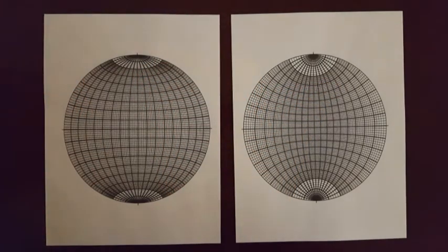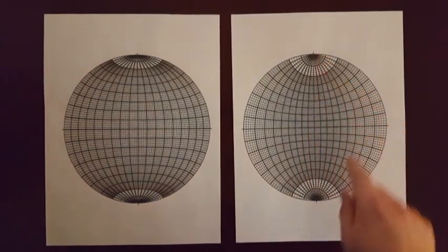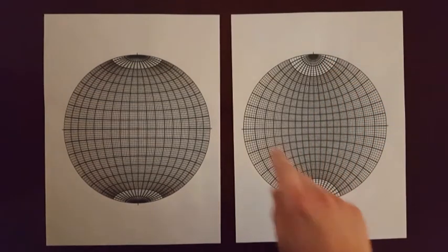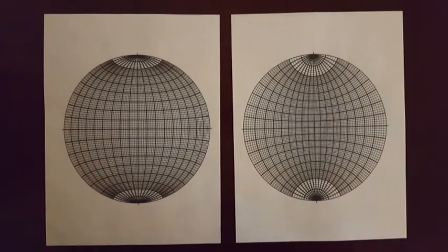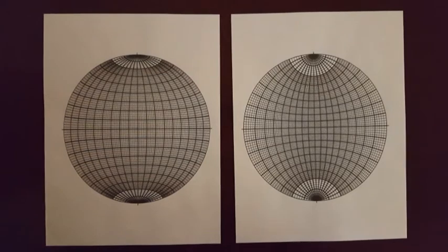I have two types of stereonets here. The one on the right is the Wolf equal angle stereonet. This means that the hemisphere has been projected such that the angle between lines of longitude and lines of latitude is always 90 degrees. The one on the left is the Schmidt equal area stereonet.